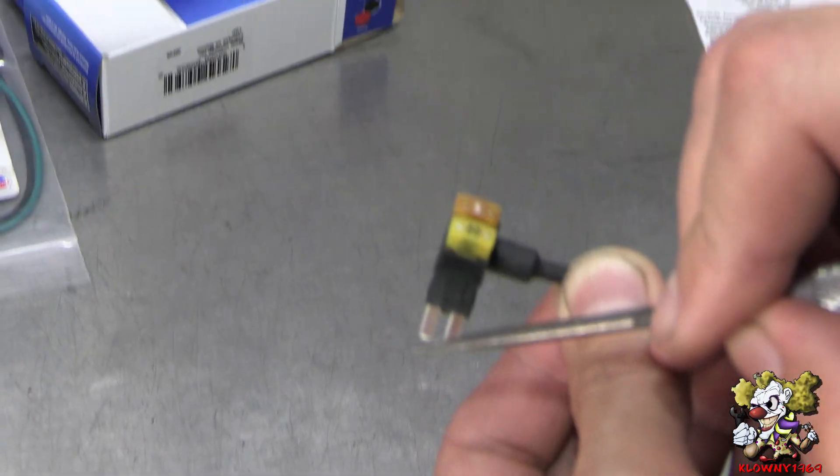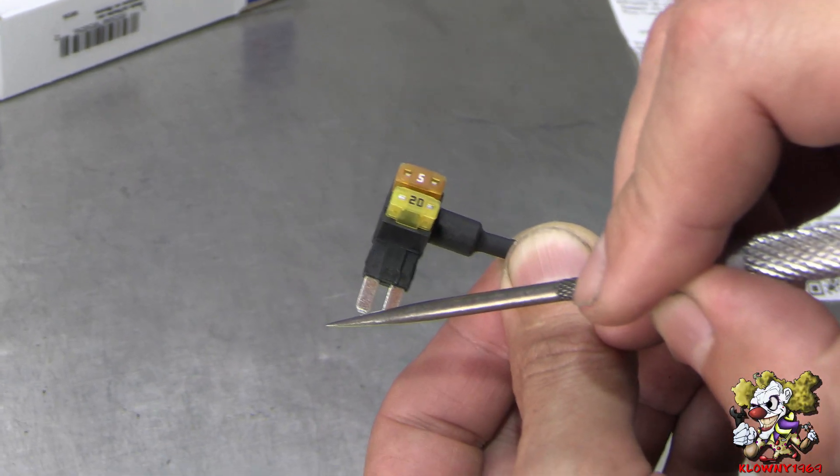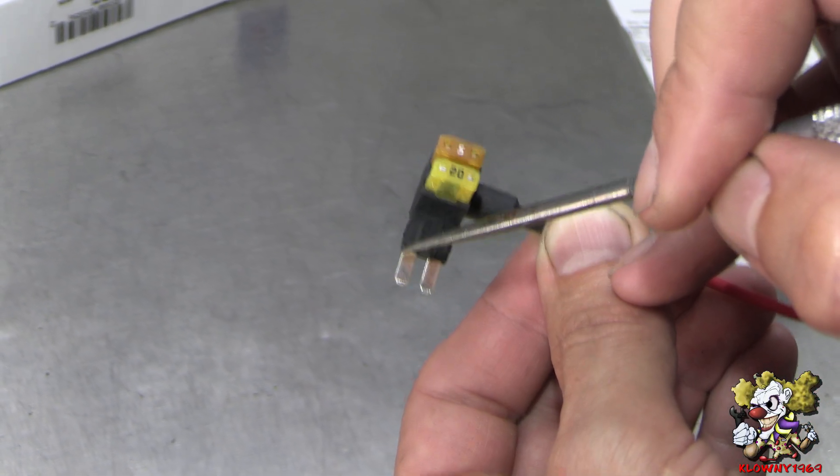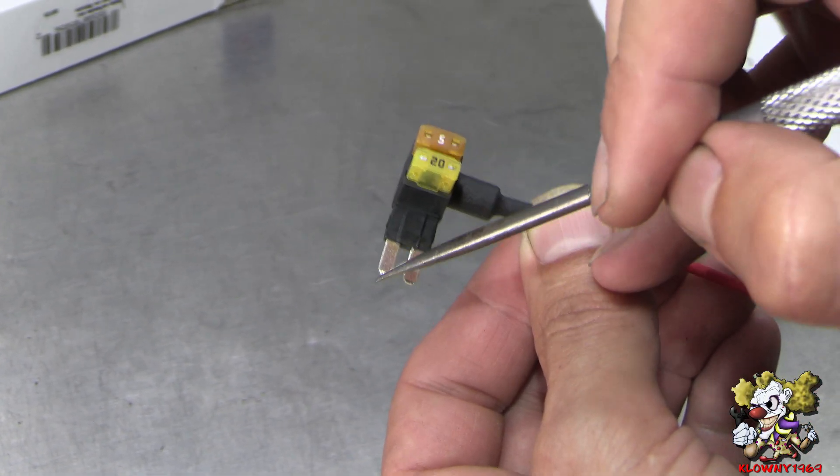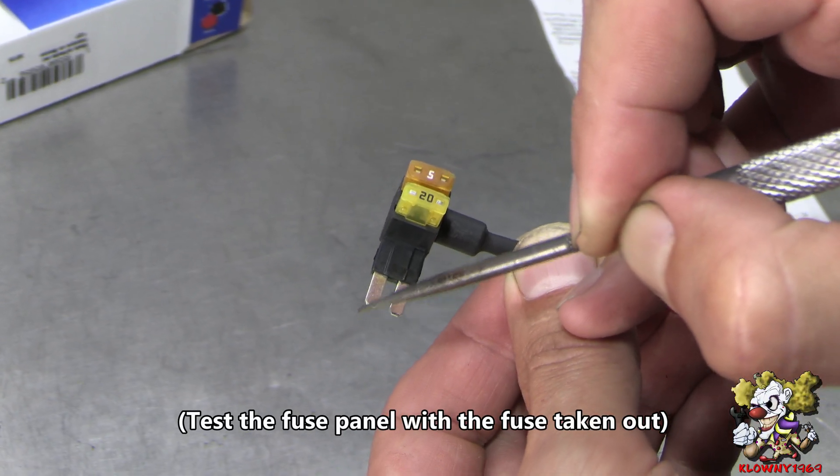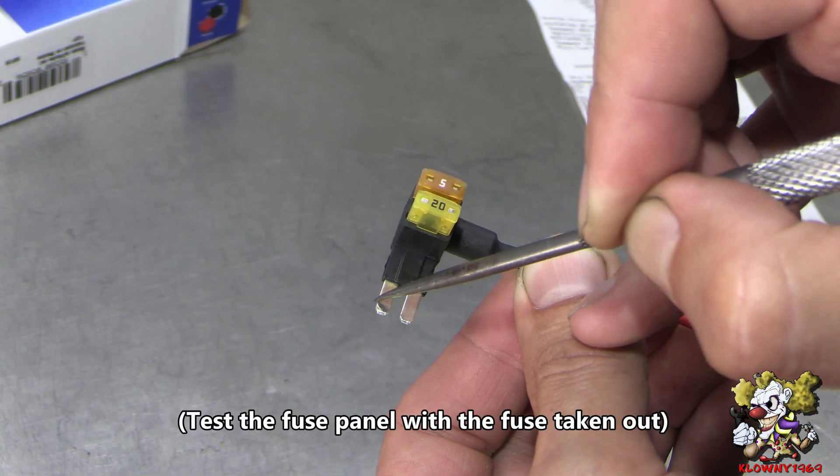What you want to do here is find where the positive side comes into the fuse block. In this case this is switched on ignition. So I put a test light here and when you turn the key on, this side is where you want the test light to turn on. You're going to put it on this side.